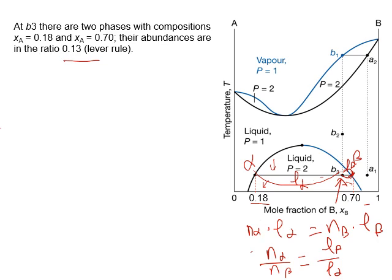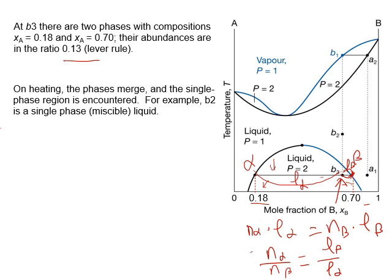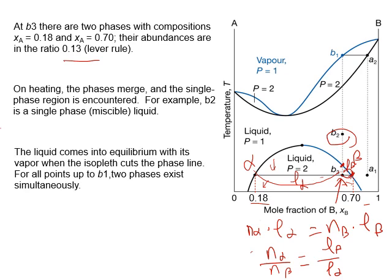When you heat the solution, the two liquid phases merge. At point B2 you only have a single liquid — the two liquids have combined. When you keep heating, at the next point some vapor starts to form, so you have two phases: liquid and vapor. In other words, this is the boiling point. All the way to B1 you see two phases — liquid and vapor — until the temperature goes above B1, where all liquid becomes a single vapor phase.